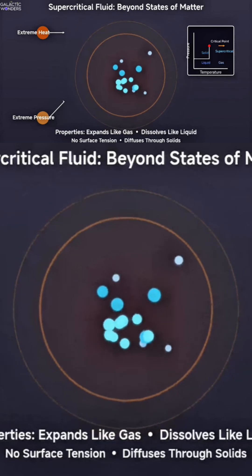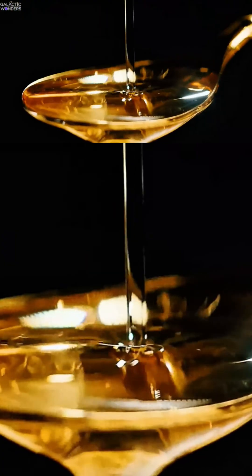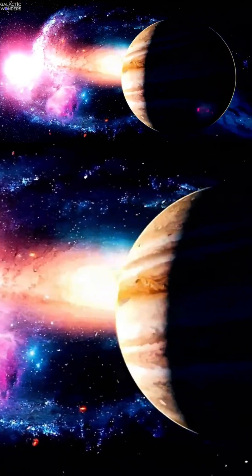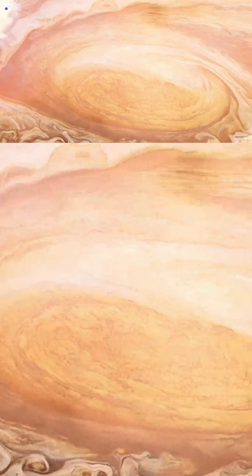This isn't some lab curiosity either. Supercritical CO2 is used to decaffeinate coffee and extract essential oils. And deep inside Jupiter, hydrogen exists in a supercritical state that's neither truly liquid nor gas.